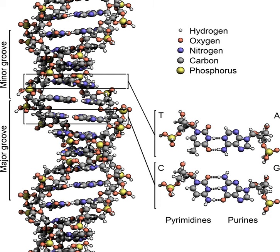In eukaryotes, such as animals and plants, DNA is stored inside the cell nucleus, while in prokaryotes, such as bacteria, the DNA is in the cell's cytoplasm. Unlike enzymes, DNA does not act directly on other molecules.